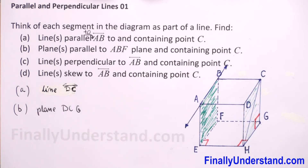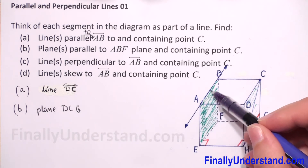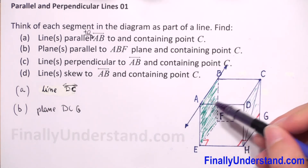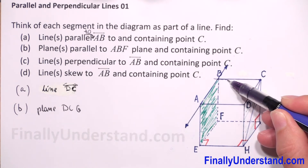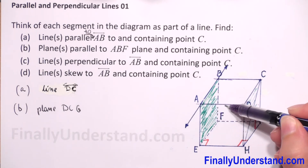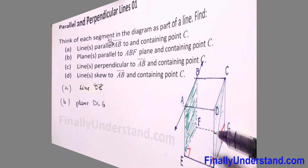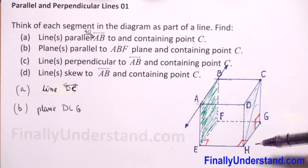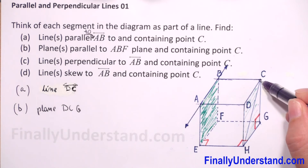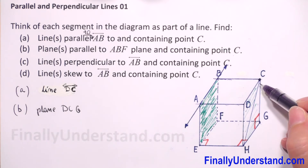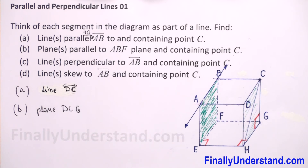Next we have to find lines perpendicular to line AB and containing point C. The lines perpendicular to AB are BC, AD, AE, and BF. Since we need the line to also contain point C, the answer to question C is line BC.